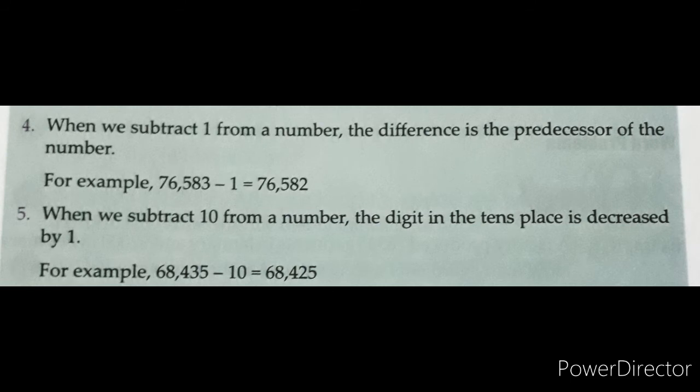Number 4. When we subtract 1 from a number, the difference is the predecessor of the number. When we subtract 1 from any number, the difference is its predecessor — meaning the number that comes one before it. Example: 76,583 − 1 = 76,582.